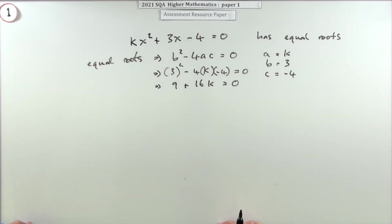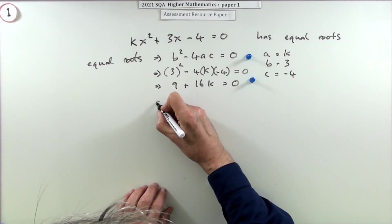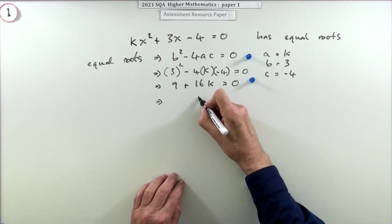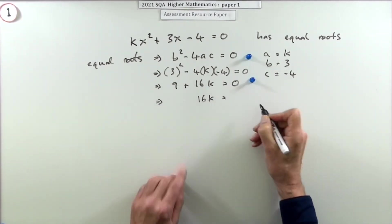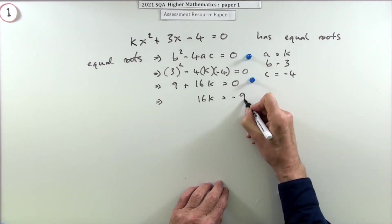So that means you've got 9 take away a negative, plus 16k equals zero. Now at that point you get the second of the two marks. The two marks were for knowing that the discriminant should equal zero and having the correct figures, and then starting to tidy it up.